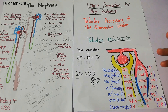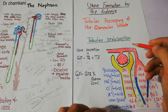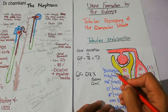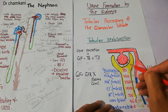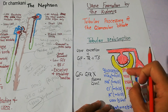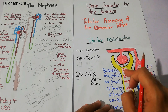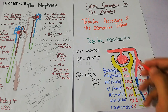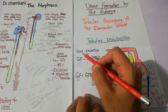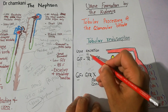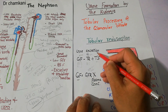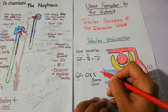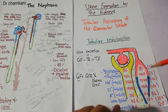For example, 180 grams of glucose is filtered per day from the glomerular capillaries into the Bowman's capsule. Out of that 180 grams per day, 180 grams is reabsorbed into the peritubular capillaries and zero glucose is excreted in the urine. So glomerular filtration is 180, tubular reabsorption is 180, tubular secretion is zero — therefore urine excretion of glucose is normally zero. There is no glucose in the urine normally.